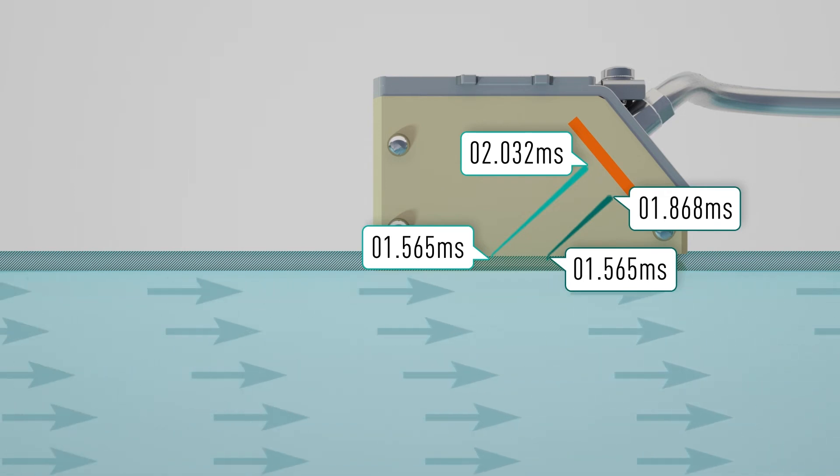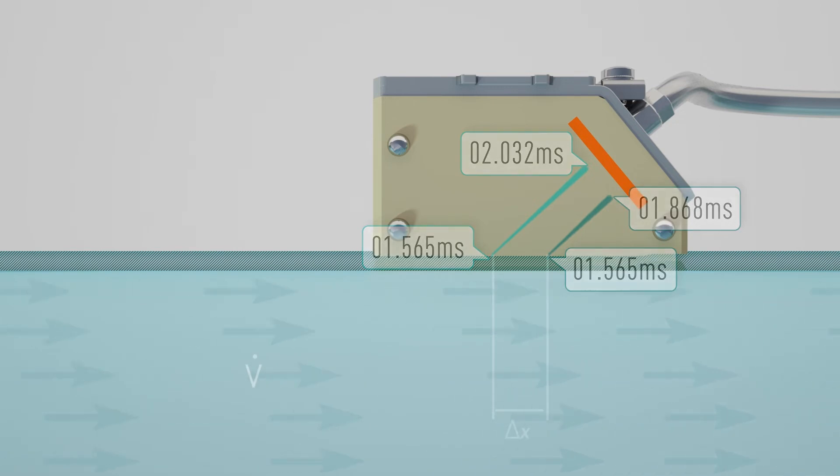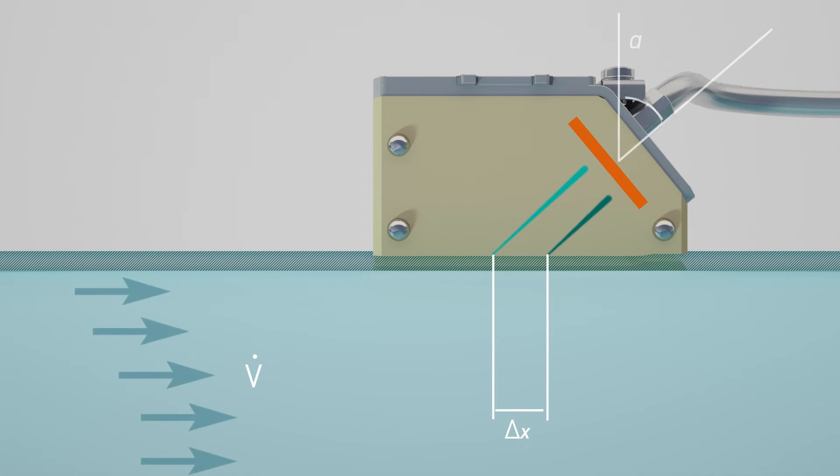But dependent on the flow velocity of the fluid, it experiences a spatial shift, delta x. Due to the angle alpha of the transducer wedge, this shift causes a decrease of the ultrasonic signal's path length inside the transducer wedge by delta l.